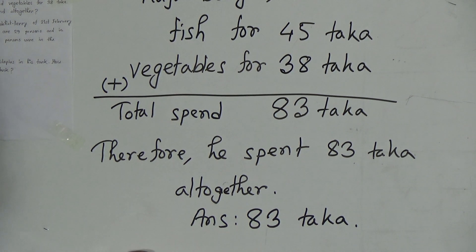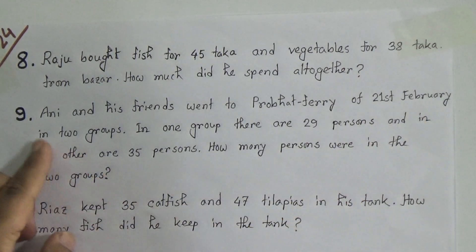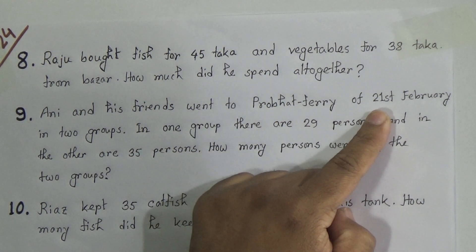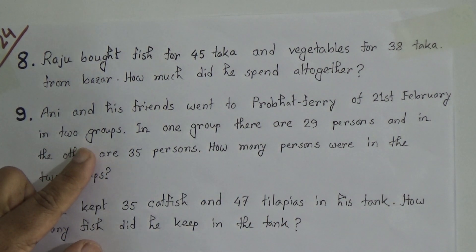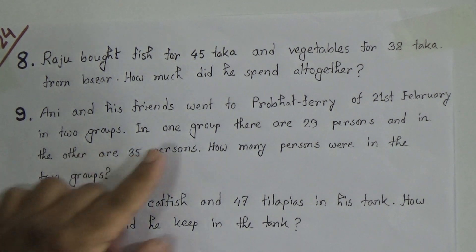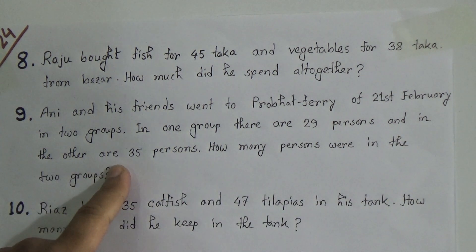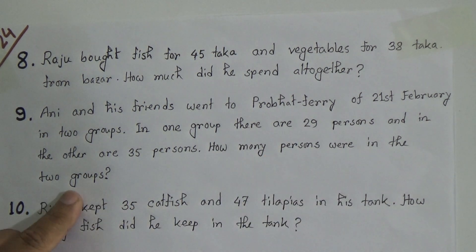Now we will solve question number 9. Question number 9 is: Annie and his friends went to Prabhat Ferry of 21st February in two groups. Prabhat Ferry means on International Mother Language Day, 21st February, we make a Prabhat Ferry early in the morning. They made two groups — in one group there are 29 persons and in the other group there are 35 persons. How many persons were in the two groups? We need to calculate the total, so we should add these two again.